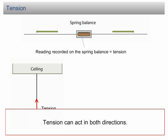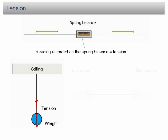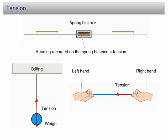Tension can act in both directions. For example, a student pulls a string with his hand and hence produces a tension in the string. For his right hand, he will find that the tension of the string pulls to the left, whereas for his left hand, he will find that the tension pulls to the right. The direction of tension depends on which object it is pulling.